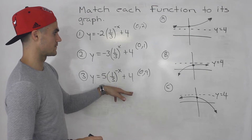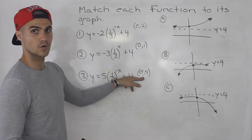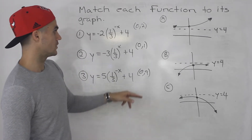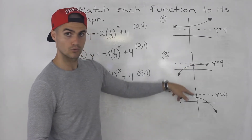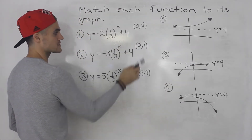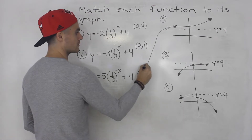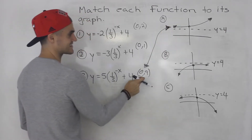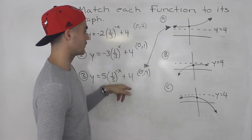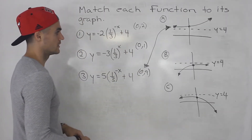Out of all of these y-intercepts, which can we match to a graph? The y-intercept of (0, 9) is the only one that's above the horizontal asymptote of y equals 4. Both of the other y-intercepts are below the horizontal asymptote. So we can definitely tell that function 3 matches graph A, because that's the only function with a y-intercept above the horizontal asymptote.